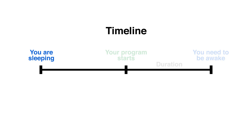For example, let's say you need to be up by 7 a.m. and that you want your program to last 30 minutes — then 6:30 will be the perfect time for your program to start.